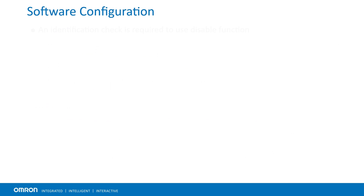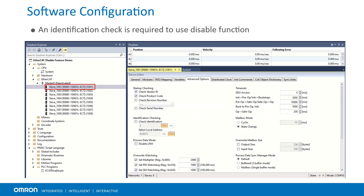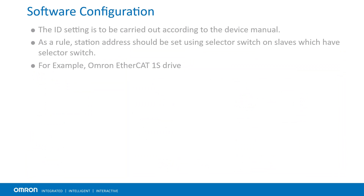The last parameter is identification tracking. The ID check is required to identify the present slaves as the expected ones. Click on the device in the solution explorer and select the advanced options. Within the device editor window, check the identification box for each slave. Make sure the slave ID is unique for each slave.